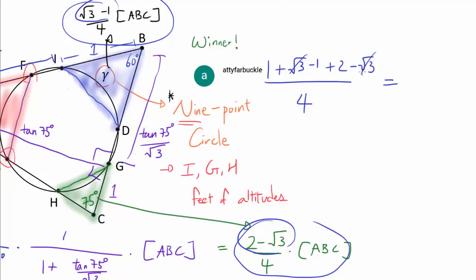Plus 2 minus square root of 3. And this thing is, square root of 3's go away, 1's go away, simply 2 over 4 or 1/2.